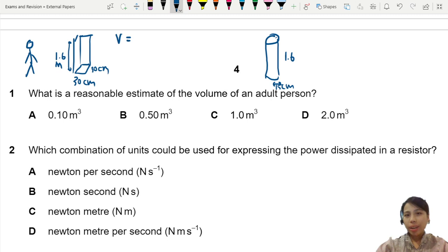So if you use the first rectangle to estimate a volume, you could do 1.6 times 0.3 times 0.3. That will give you the volume estimate, which is 0.144 meters cubed.